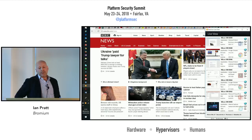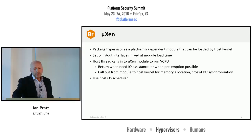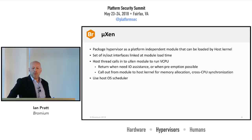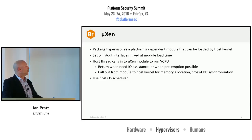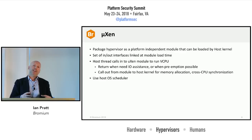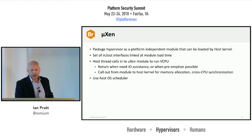The way we went about doing this was by taking Xen but packaging it differently. We created a platform-independent module built out of Xen that could be loaded into the host kernel, with a well-defined set of interfaces for calling into the module — for example to execute a vCPU associated with a VM — and for the module to call out, such as when it needs to allocate memory. This gives a narrow interface between the two. All scheduling of VMs is done by the host OS scheduler, so we could take Xen and just start ripping bits out of it to get a much smaller module that could be loaded into the kernel on multiple OSes.